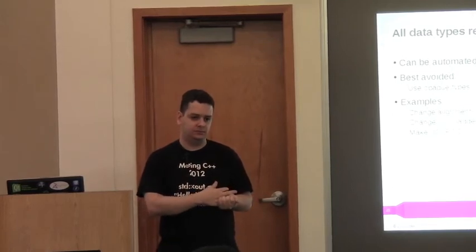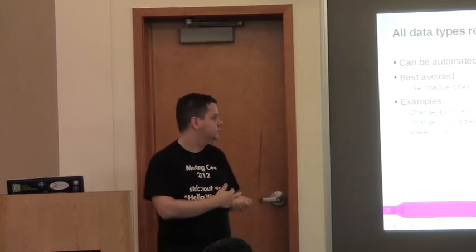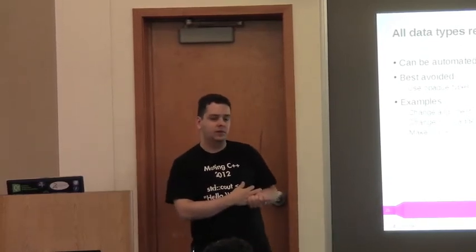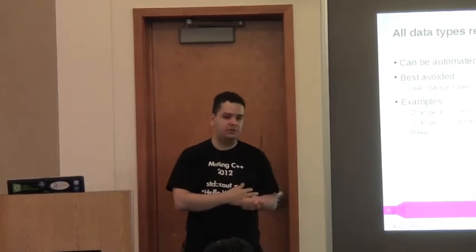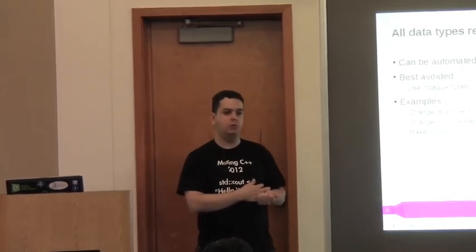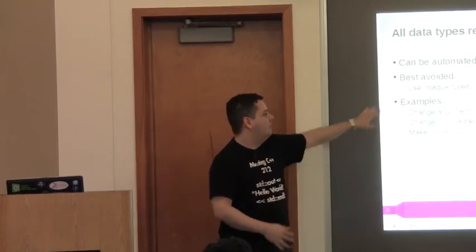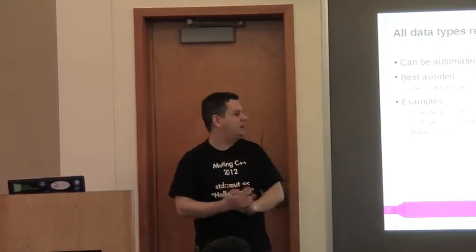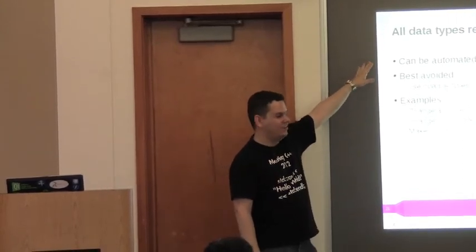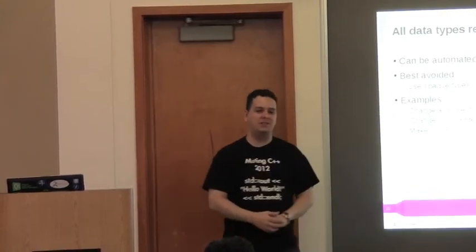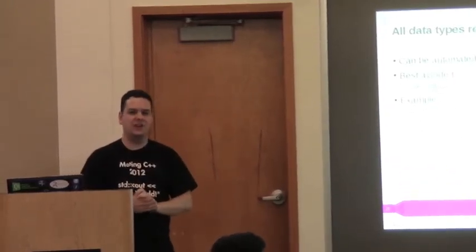The non-padded size: the compiler is allowed to use the tail padding of the base class to allocate new members of your derived structure — something recently discovered that needs more investigation. A question was raised: why would you not want to use private implementation? To clarify: what is 'best avoided' is changing types directly. The solution to that is to use private implementation — the pimple idiom.